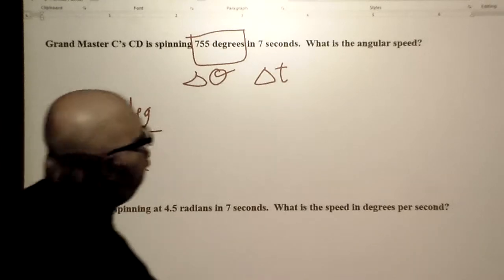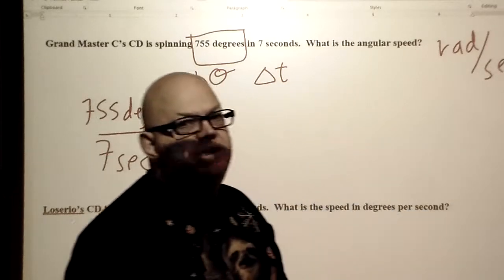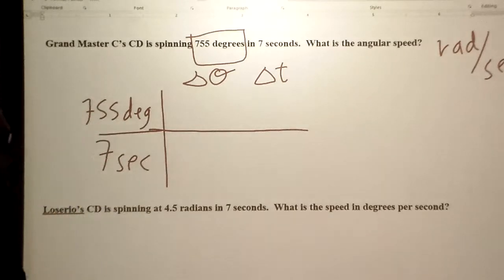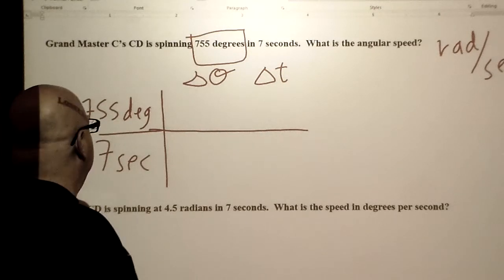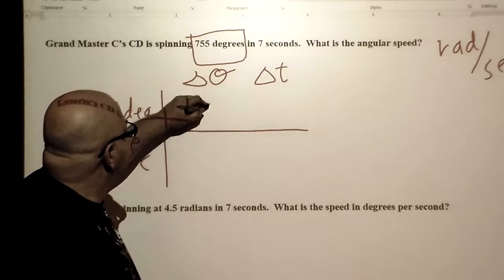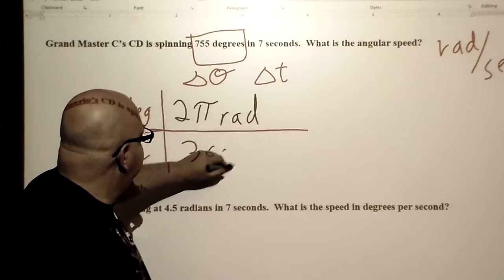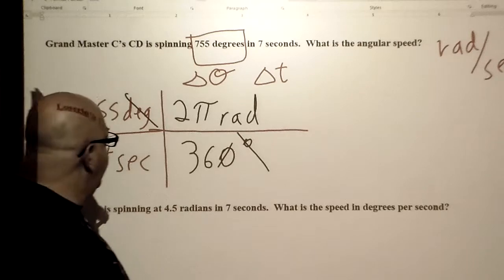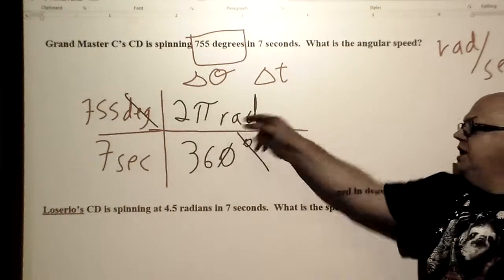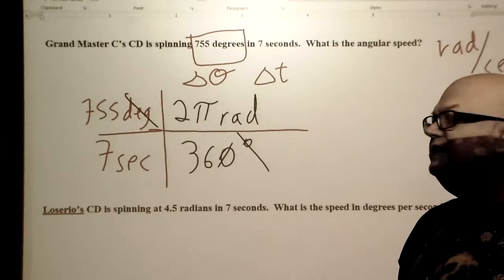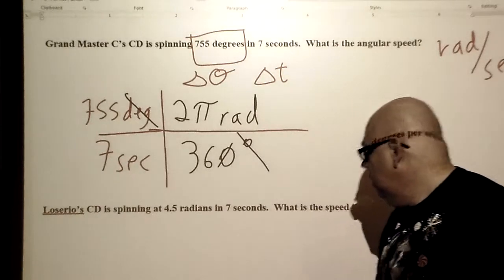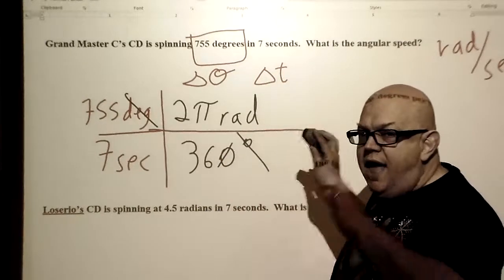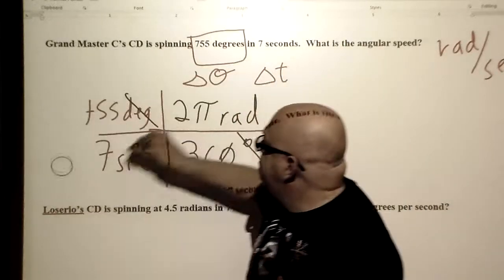What if I want it in radians per second instead? Remember, that is another unit for angular speed — this is just a conversion. I don't need to convert the seconds, just the degrees into radians. I know 2 pi radians equals 360 degrees, so the degrees cancel each other out and we multiply through. It's okay to have pi in the answer for radians. I'm not solving the problems for you — I'm setting them up. All you need to do is punch the numbers into your calculator.